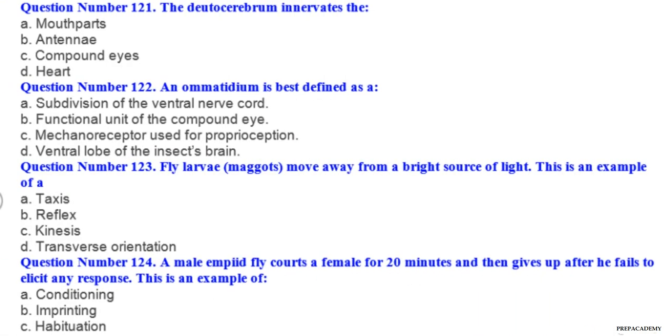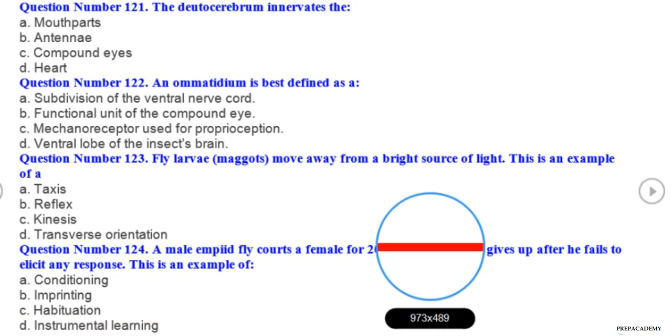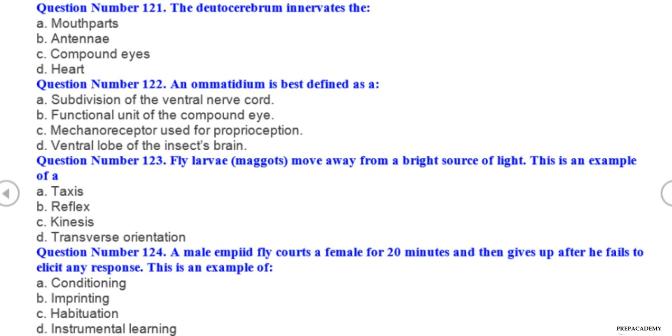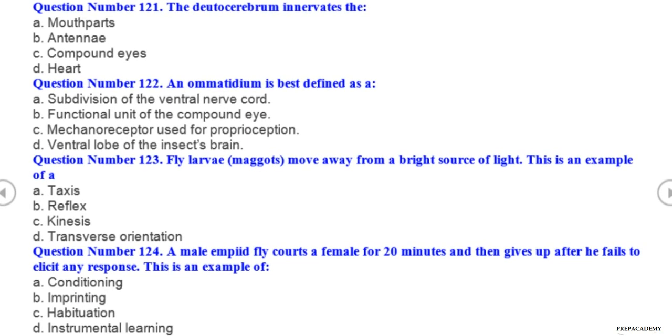Question number 121. The deutocerebrum innervates the: A mouth parts, B antennae, C compound eyes, D heart. Question number 122. An ommatidium is best defined as a: A subdivision of the ventral nerve cord, B functional unit of the compound eye, C mechanoreceptor used for proprioception, D ventral lobe of the brain.